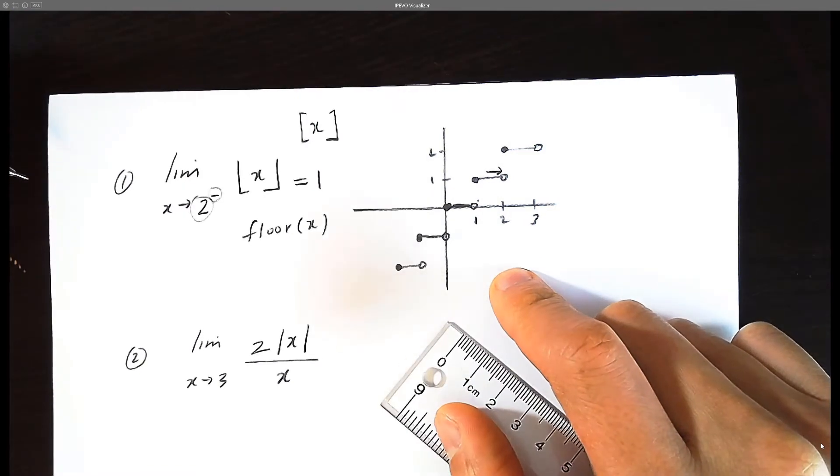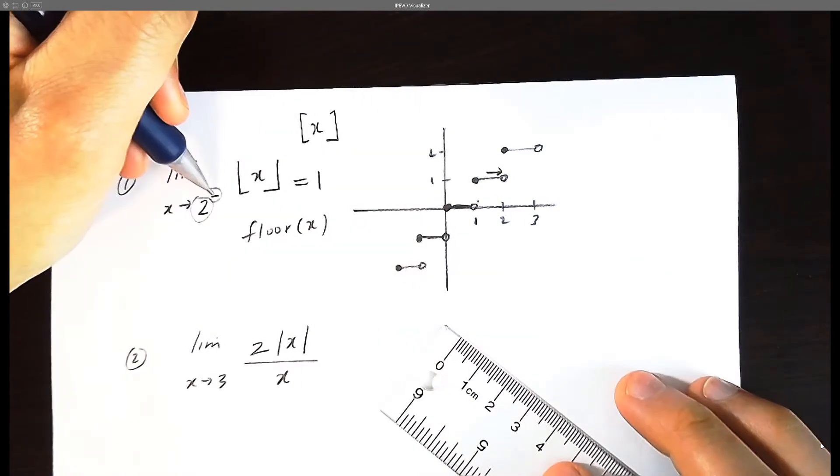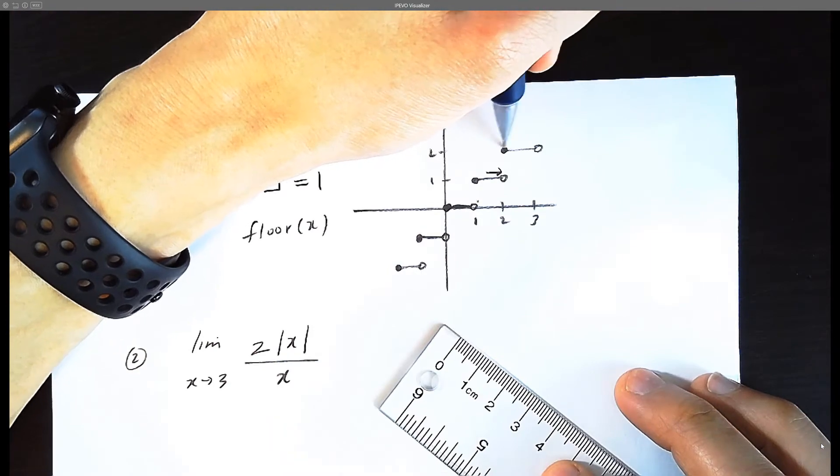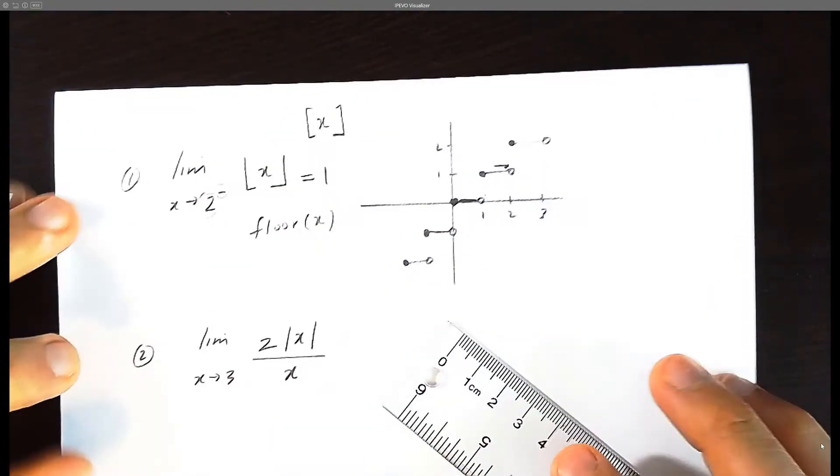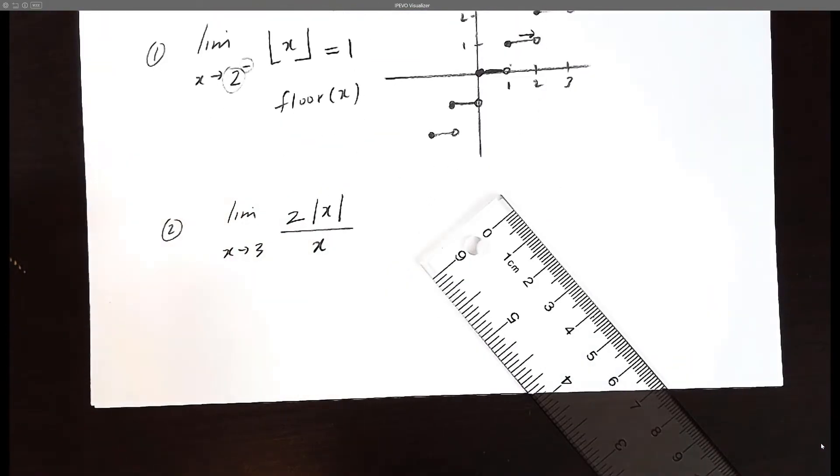So make sure you're not on the wrong step. If this was a plus sign, the answer would be two, because you're sliding from the right.